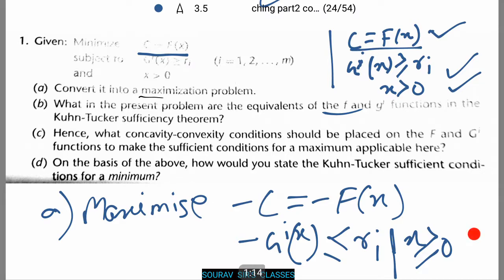This is because x is an input function or an input variable. Now, in the next question, we see what in the present problem are equivalence of f and g to power i functions in the Kuhn-Tucker sufficiency theorem. Let's see how to do that.